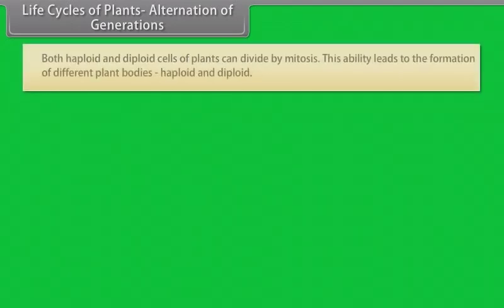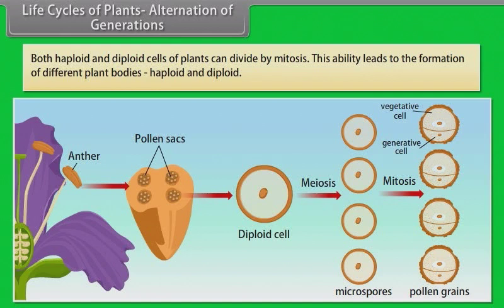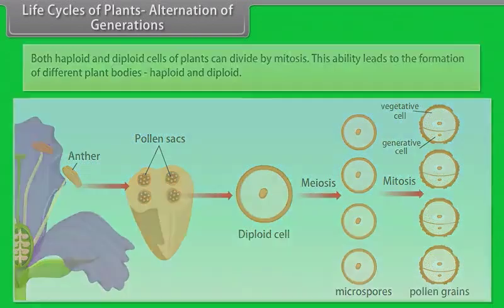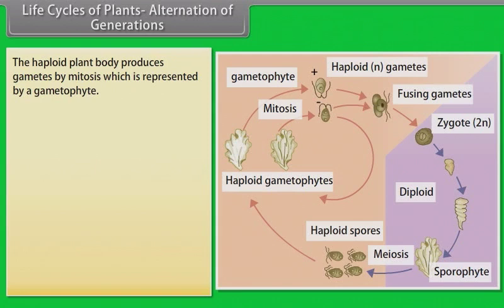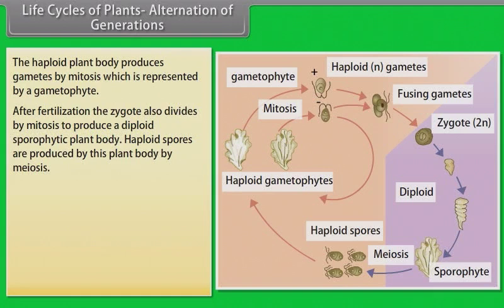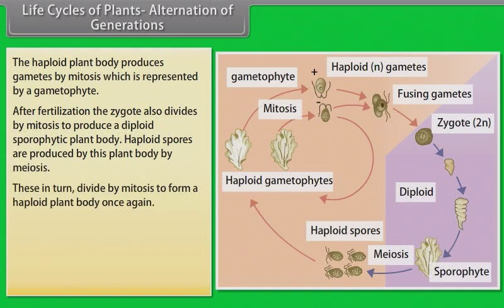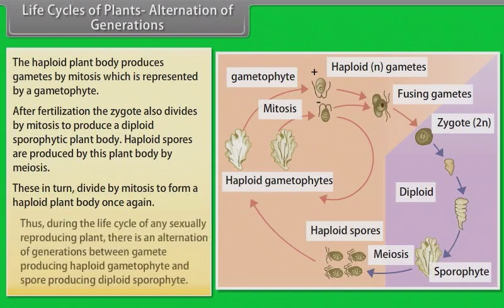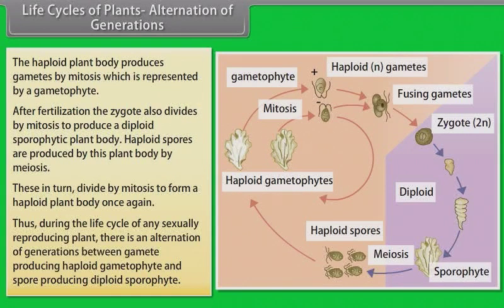Life Cycles of Plants - Alternation of Generations: Both haploid and diploid cells of plants can divide by mitosis. This ability leads to the formation of different plant bodies, haploid and diploid. The haploid plant body produces gametes by mitosis, which is represented by gametophyte. After fertilization, the zygote also divides by mitosis to produce a diploid sporophytic plant body. Haploid spores are produced by this plant body by meiosis. These in turn divide by mitosis to form a haploid plant body once again. Thus during the life cycle of any sexually reproducing plant, there is an alternation of generations between gamete-producing haploid gametophyte and spore-producing diploid sporophyte.